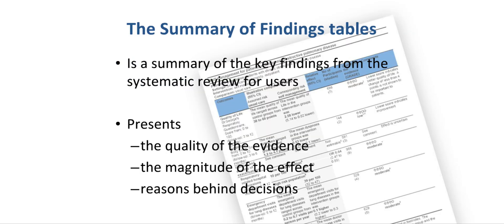We will now introduce the Summary of Findings table in more detail. The Summary of Findings table is a summary of the key findings from a systematic review, and it presents the quality of the evidence, the magnitude of an effect, and the reason behind judgments that are being made to evaluate the quality of evidence.